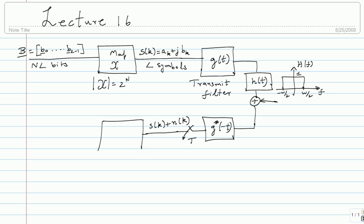For now we only know how to do detection when only noise is added to the symbol. Since I chose my orthonormal basis to be G of T minus kT, I can do this simple detection with no ISI. So you could choose another orthonormal basis as long as you know how to detect the resulting symbol values — that's the main thing to keep in mind. This ultimately gives me B hat.